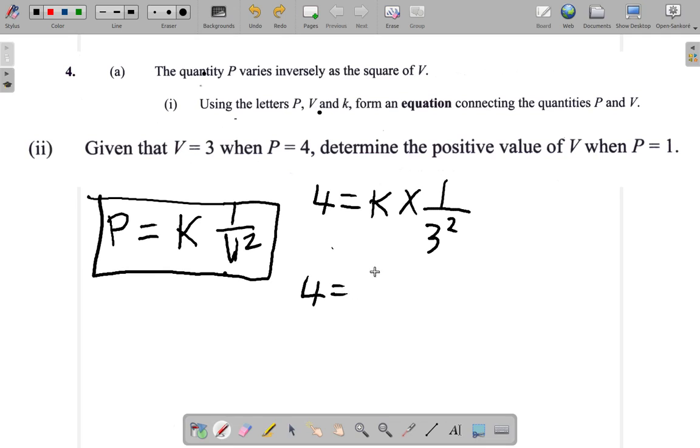4 equals K times 1 over 9. It's the same as 4 over 1 is equal to K divided by 9.